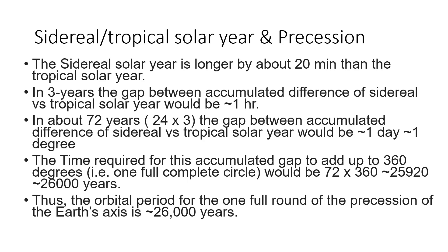In about 72 years — how did I calculate 72 years? One solar day has about 24 hours, and three years of accumulation gives me a difference of one hour. So essentially in 72 years the gap between the accumulated difference of the sidereal solar year and the tropical solar year would have a delta of one day, or approximately one degree.